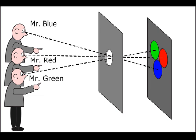Close to him is Mr. Green, and he can only see the green circle. Finally, we have Mr. Blue who can only see the blue circle.